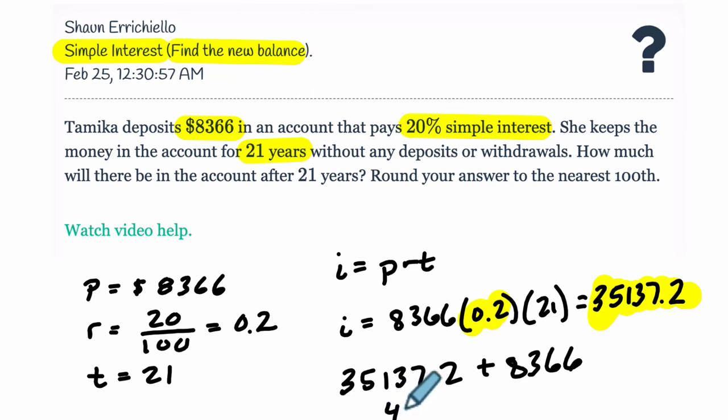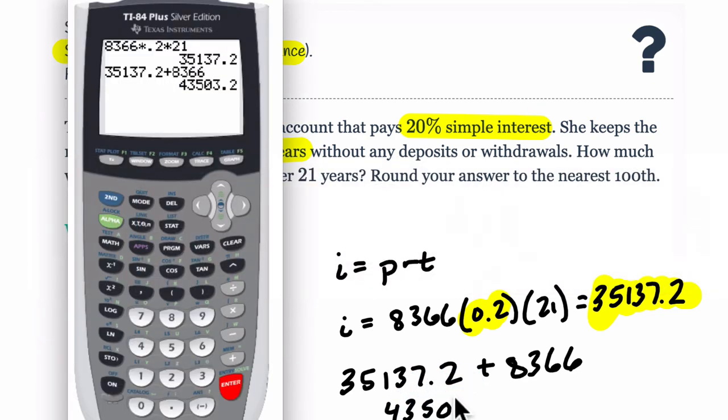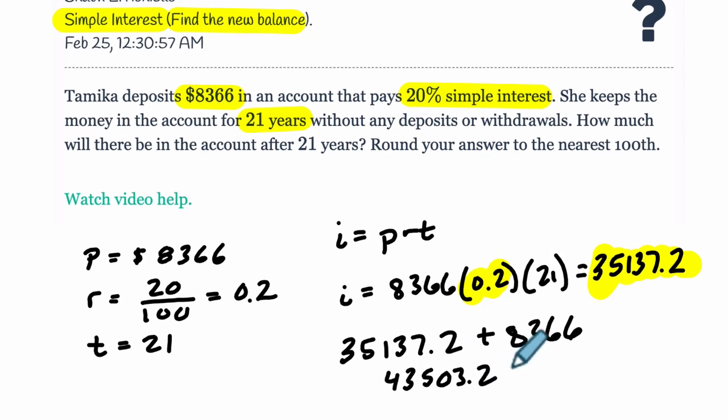And that's our answer. 43,503.2. So, that's our interest plus that original principal. All right. I hope that helped.